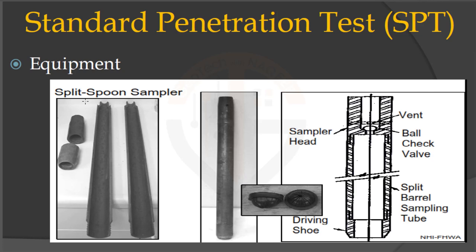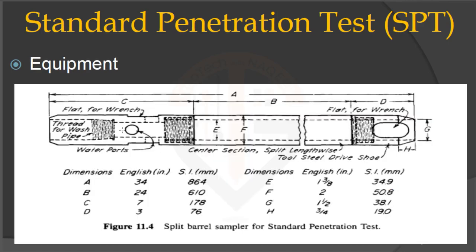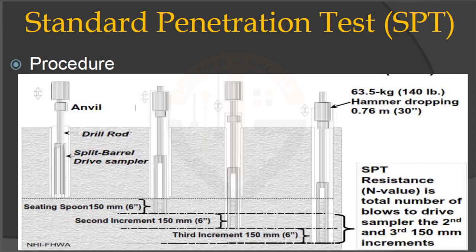Another key piece of equipment is the split spoon sampler, which is used to extract the soil sample from a borehole at a desired depth. The force is transferred to the soil through the drill rods, causing penetration in the soil. The penetration of the first six inches is not considered; the SPT-N values against the next 12 inches are recorded and are known as SPT resistance values.